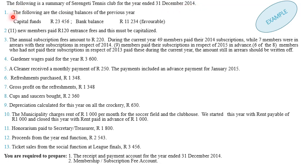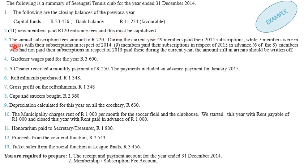Transaction 1: the closing balances of the previous year 2013 — the closing balance for the capital account is 23,456, and the closing balance for the bank account is 11,234, which is a favourable balance. Transaction 2: 11 new members paid 120 entrance fees, and this must be capitalised.